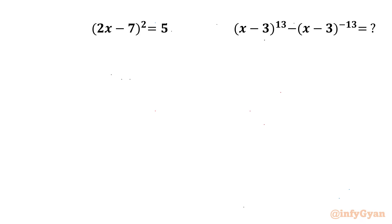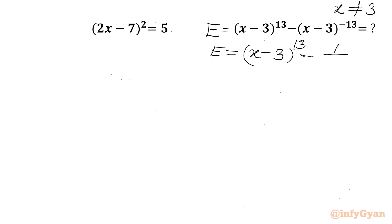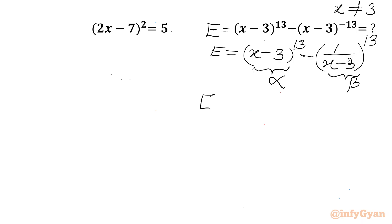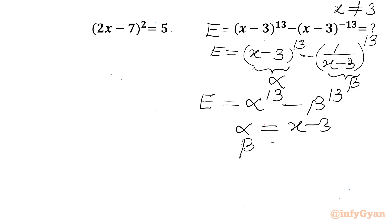Let's get started by writing the required expression equal to E. Note that x cannot equal 3, since x-3 appears in the denominator. I will write E = (x-3)^13 minus 1/(x-3)^13. Now I will let α = x-3 and β = 1/(x-3), so the expression E we are looking for equals α^13 minus β^13.